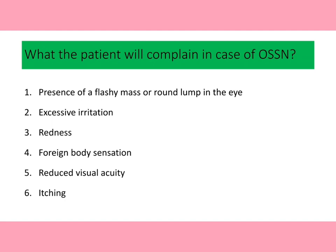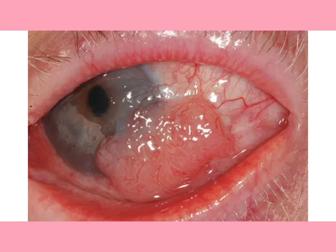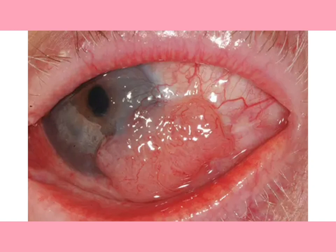Clinically, OSSN appears as a gray-white lesion with irregular borders and the presence of feeder vessels. When stained with rose bengal, it will stain positive. However, by looking at the clinical picture alone, you cannot differentiate whether it is CIN or SCC — for that, histopathology is required.